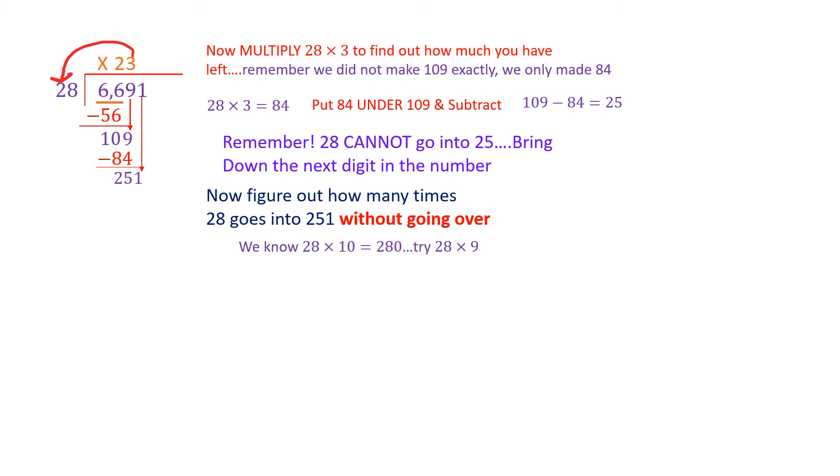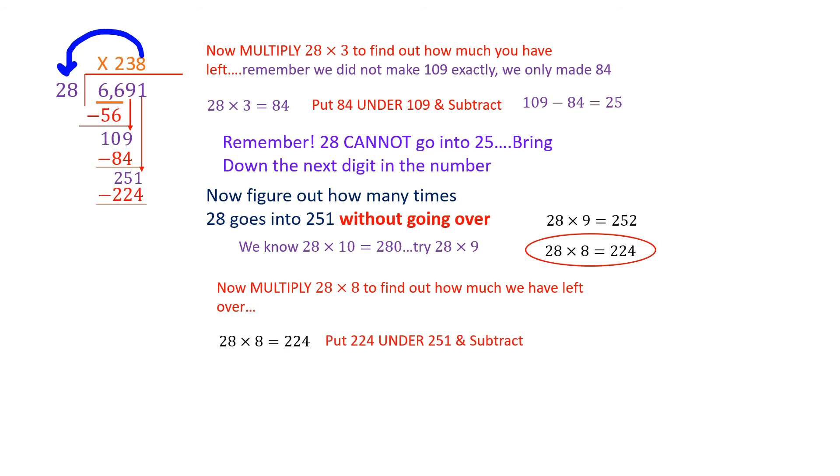Well, I know 28 times 10 is 280 because it's easy multiplying by tens. So 280 is too big. So I'm going to try 28 times 9 but have a bad feeling. 28 times 9 is just a bit too big. It's 252 and we need 251, which means we're going to have to use 28 times 8. So 28 goes into 251 8 times without going over. 28 times 8 is the winner. So we put 8 up top in our answer. And now we have to do what we have done so many times before. We have to multiply 28 times 8 to figure out how much we have left over, but we know it's 224. So we take that 224 and we put it underneath the 251 and we subtract. So 251 minus 224 is 27. Put that down there.